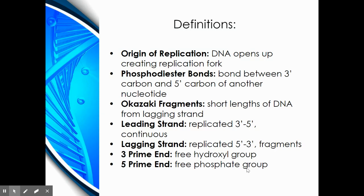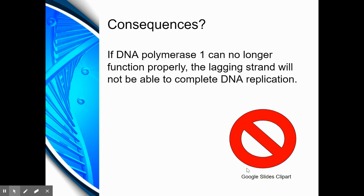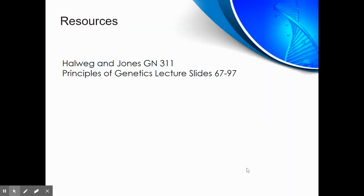The 3' end has a free hydroxyl group, while the 5' end carries a free phosphate group. If DNA polymerase 1 cannot perform an exonuclease function, the RNA primer will not get cut, which prevents the RNA nucleotides from being converted into DNA nucleotides. This would prevent the lagging strand from conducting DNA replication.